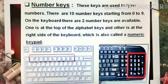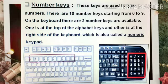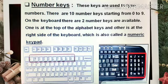The first picture shows that the number keys are available on the top, and the next picture shows that all the number keys are available on the right-hand side of the keyboard, which is also called a numeric keypad. The red color rectangle is being shown in both pictures, indicating the position where the number keys are available.